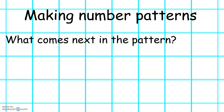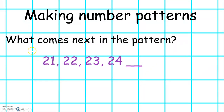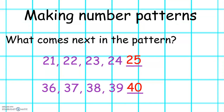When we know our numbers to 40, we can make number patterns. Let's see if we can find what number comes next in the pattern. We have 21, 22, 23, 24. What number do you think will come next? Excellent. It is 25. And in this pattern we've got 36, 37, 38, 39, and the next number is 40.